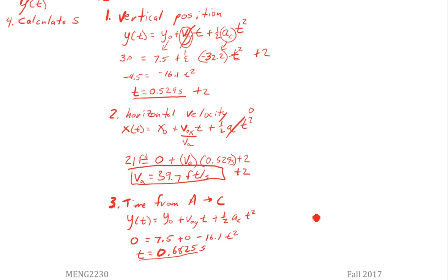So then step four, S. So we're going to have x of 0.6825 seconds equals 39.7 feet per second times 0.6825. X equals 27.11 feet. So S equals x minus 21. S equals 6.11 feet. So we get two points for that. We didn't get any points for this intermediate solution. So hopefully that makes a little more sense.